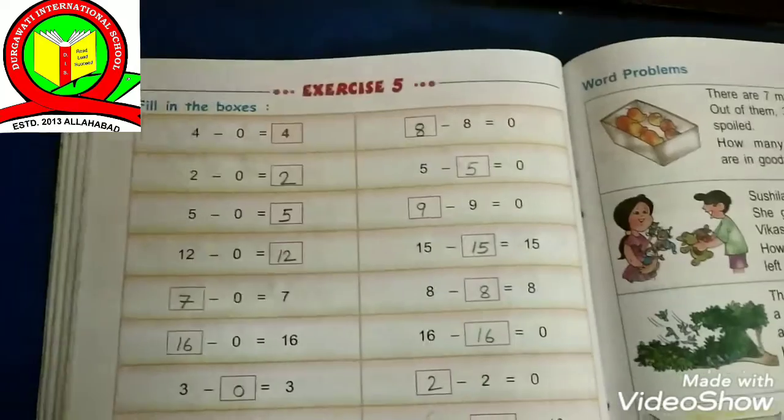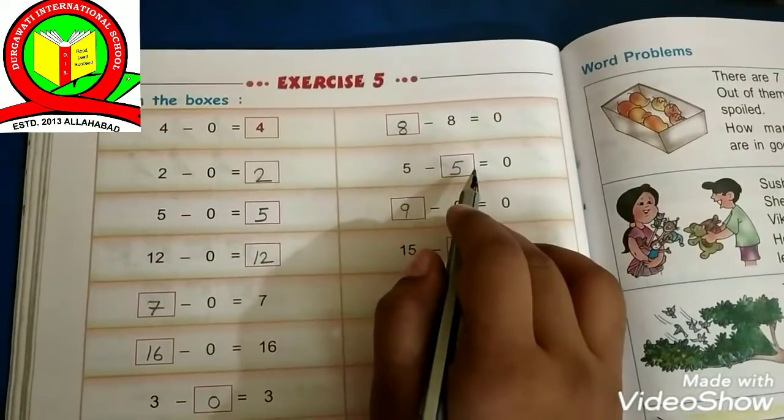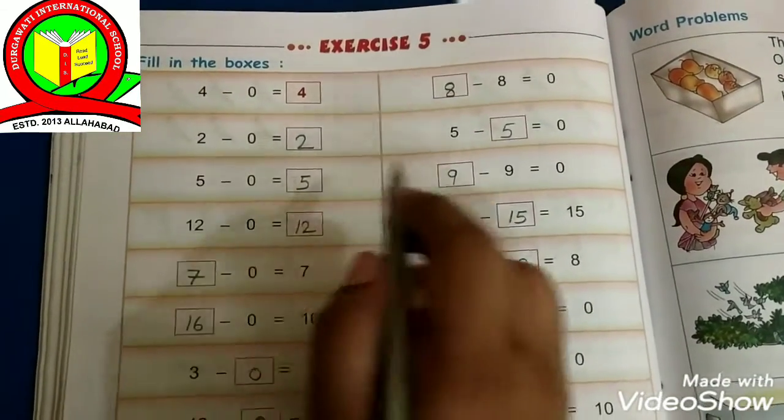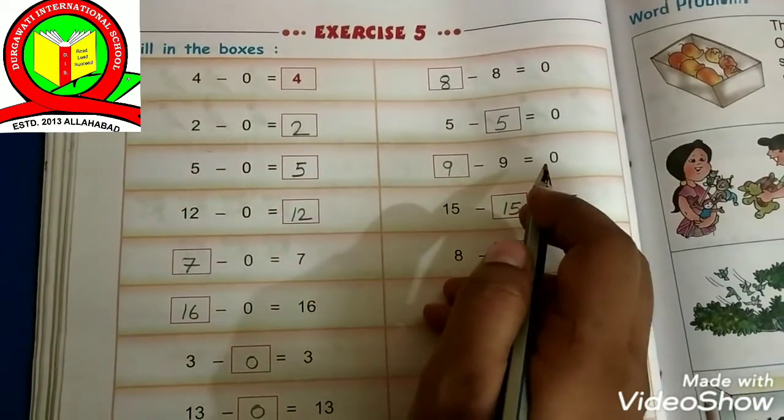So 2 minus 0 is equals to 2. 5 minus 5 is equals to 0. 5 minus 0 is equals to 5. 9 minus 9 is equals to 0.